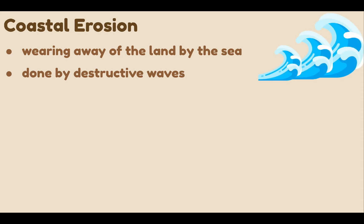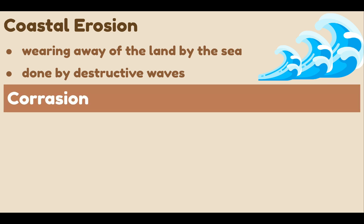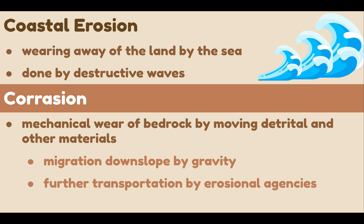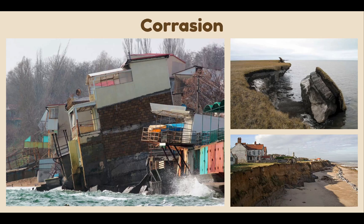There are five common processes that cause coastal erosion. Corrasion is a process of erosion which refers to the mechanical wear of bedrock by moving detrital and other materials during their migration downslope under the influence of gravity and the further transportation by erosional agencies such as running water, moving ice, or wind. In simple words, when waves pick up beach materials such as stones and hurl them at the base of a cliff, corrasion happens.